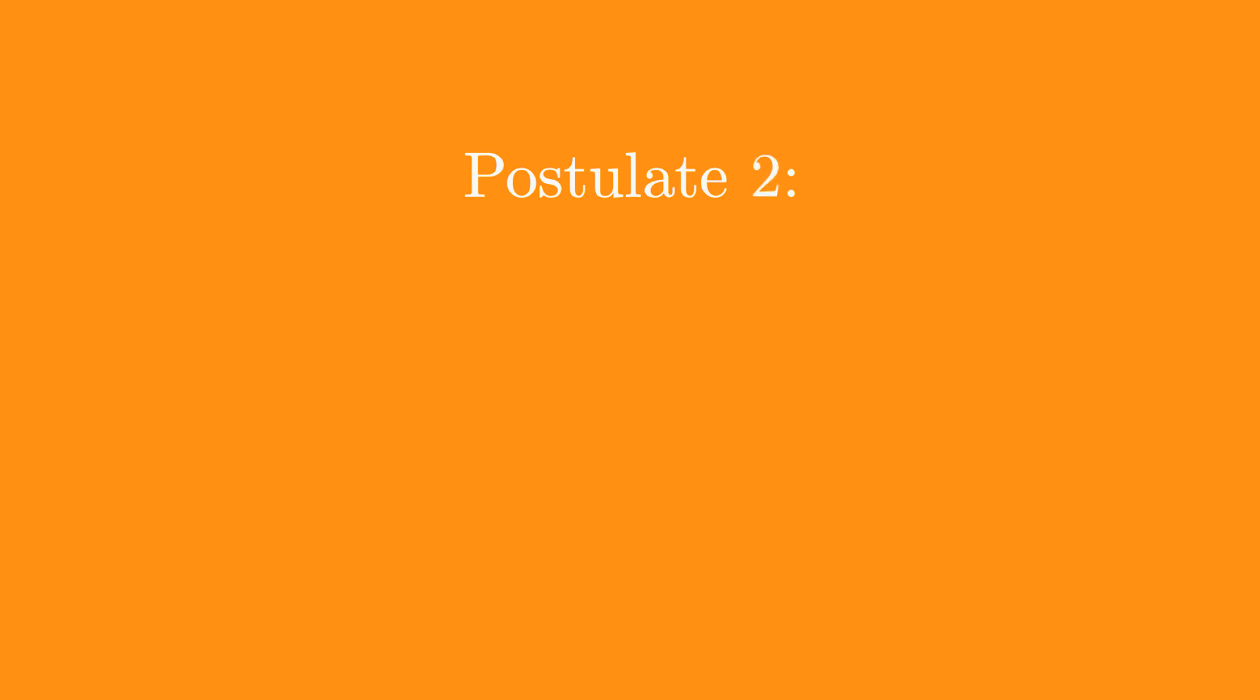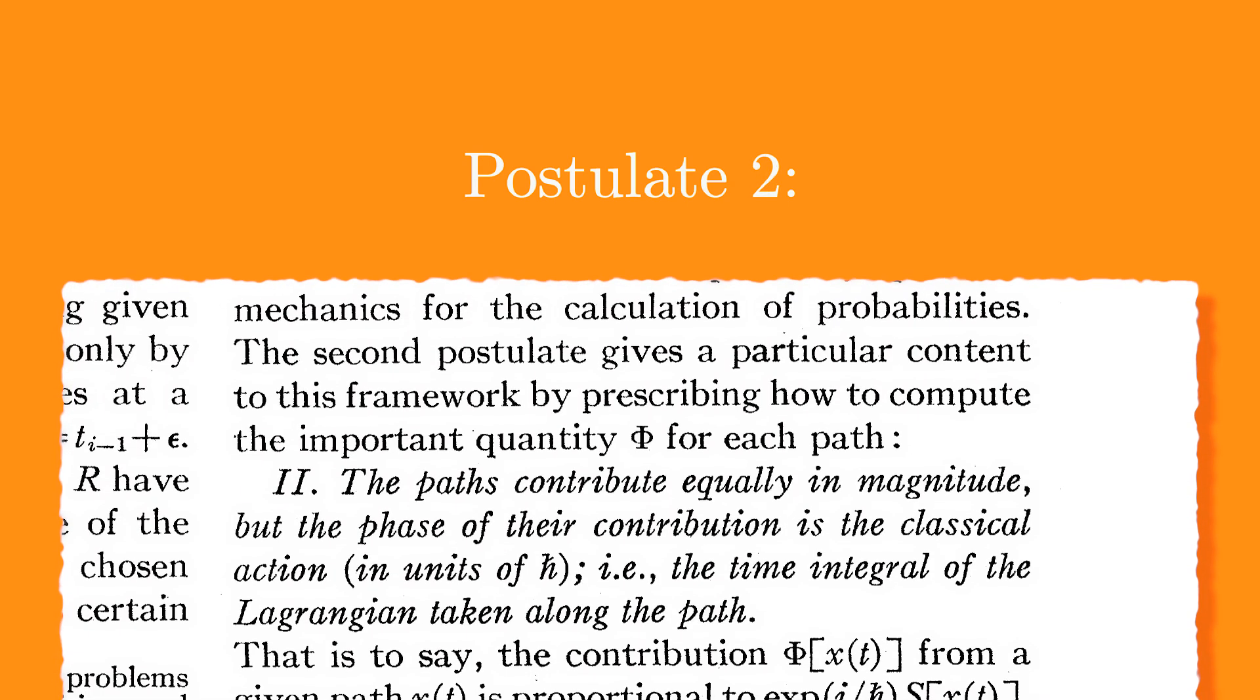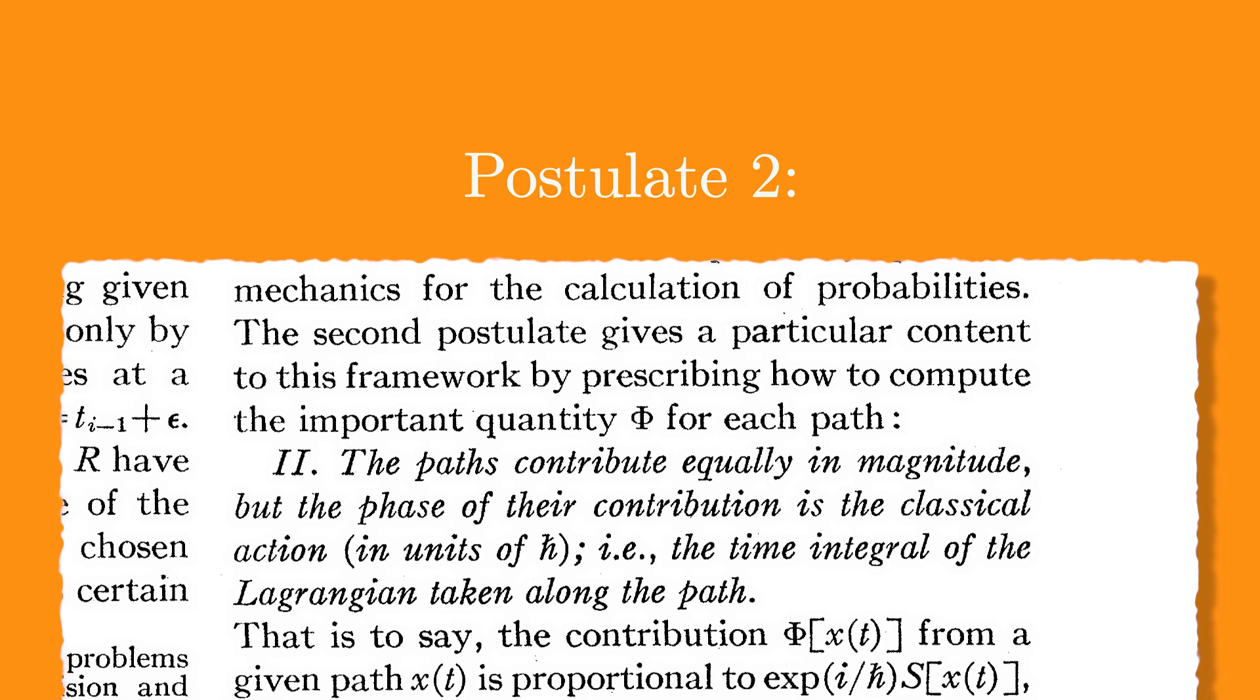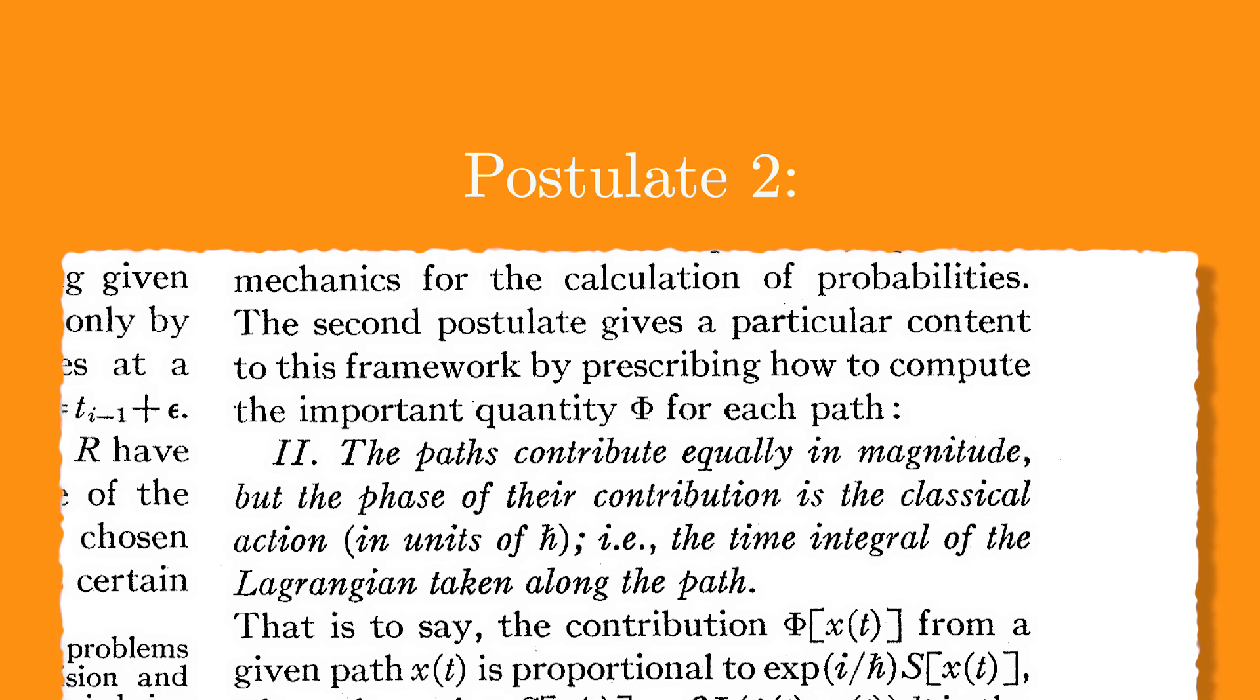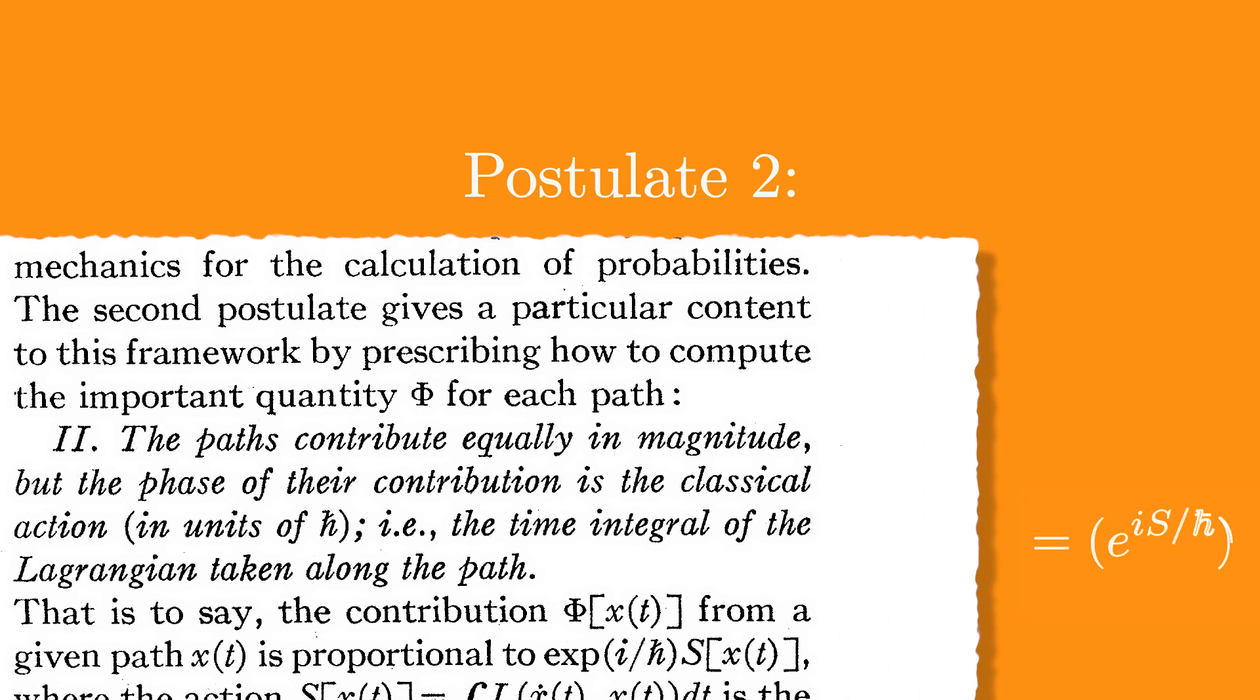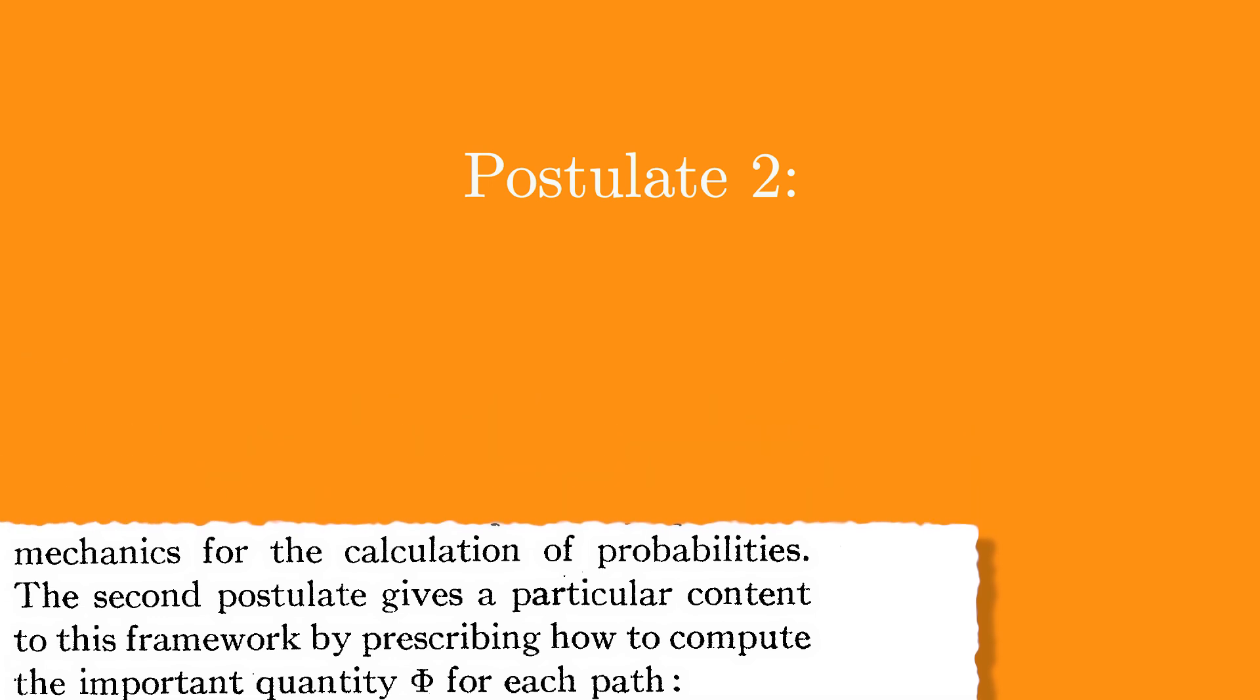The second one states the following. The paths contribute equally in magnitude, but the phase of their contribution is the classical action, i.e., the time integral of the Lagrangian taken along the path. But what is this Lagrangian? To define it physically, the Lagrangian in classical mechanics is the difference of an object's kinetic energy and potential energy, and the time integral of this Lagrangian is the special quantity called the action.